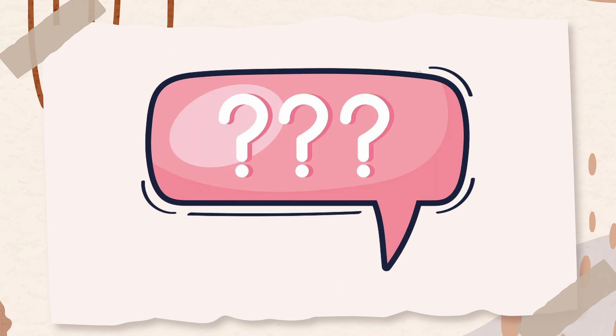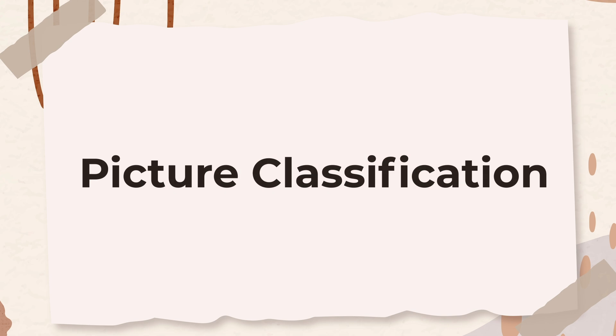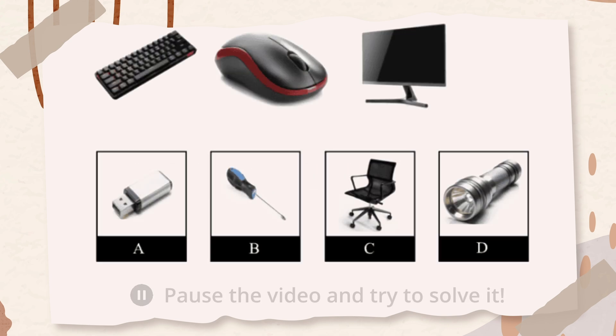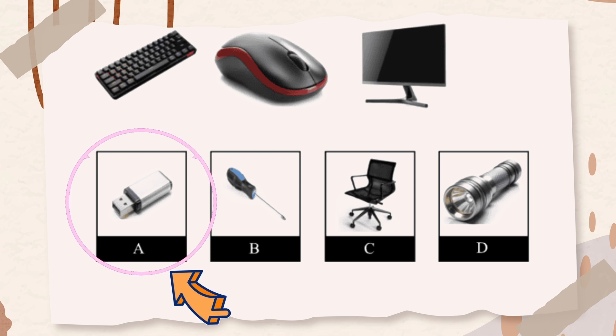All right, now we arrived at the final subtest of the test, which is called picture classification. In this question, there are three pictures. These three pictures are alike in some way. Decide how they are alike. Then choose the picture from the answer choices that belongs in the same group as the first three pictures. The images show computer accessories: a keyboard, mouse, and monitor. The missing item should be another computer-related tool. The correct answer is A. A USB stick is a common accessory used with computers.